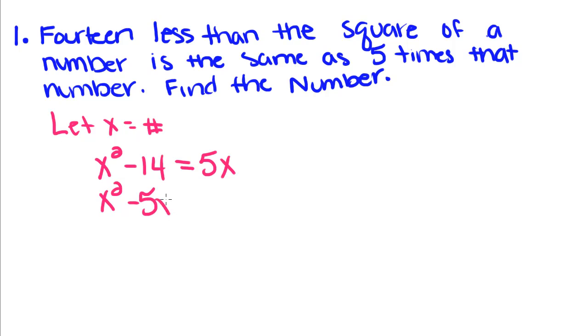I'm going to subtract that 5x over: x squared minus 5x minus 14 equals 0. Now this is not a special kind of trinomial, so we just have to factor it normally.